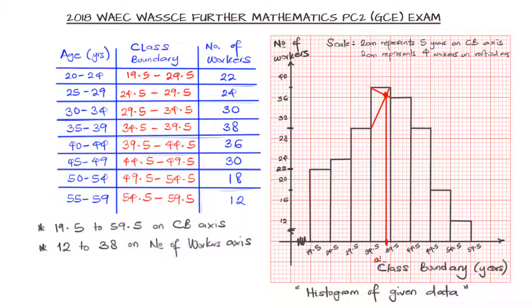And whatever value we have there is going to be our modal age. Now we have 34.5 to 39.5, and we already know that that's 5 units. So each is just one unit, because we have five divisions on my graph here. So we have 34.5, 35.5, 36.5, 37.5. So this is 38.5. So from the graph, as we are requested from the question, the modal age is 38.5 years. And that is the solution to our question.